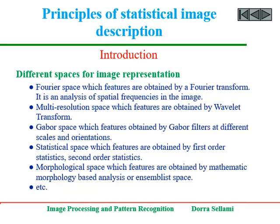Different spaces can be used, such as Fourier space, where features are obtained by Fourier transform of the image, illustrating spatial frequencies. Multi-resolution space, where features are obtained by wavelet transforms. Gabor space, where features are obtained by Gabor filters at different scales and orientations. Statistical space, where features are obtained by first-order or second-order statistics. In this part of the course, I will focus on statistical image description.